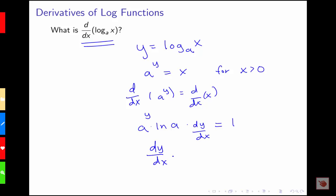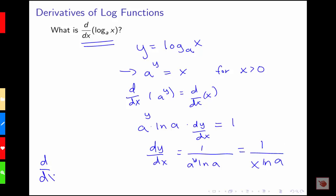So we have dy/dx is equal to 1 over a to the y times natural log a. Then remembering that a to the y equals x, we can write our derivative in terms of x. This gives us our derivative rule: the derivative of log base a of x is 1 over x times natural log a.